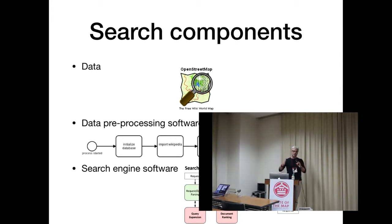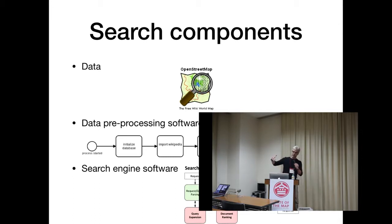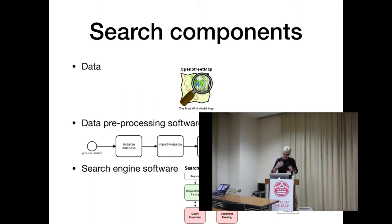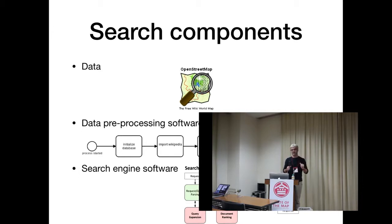I'm not speaking about geographical search engine software — you know there is Lucene, Solr, Sphinx, Google search front-end — I'm not talking about that. I'm talking about data pre-processing in the middle: software which takes OpenStreetMap data and processes it into a dedicated file containing geonames and building addresses.